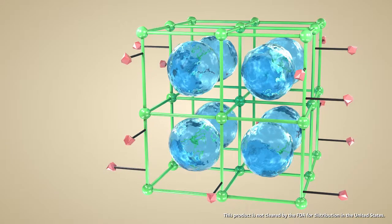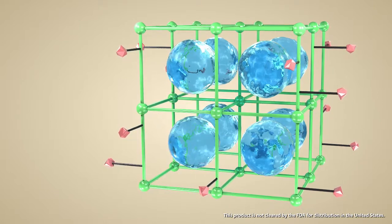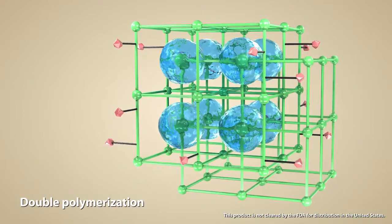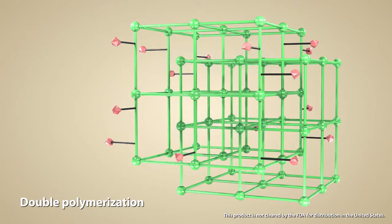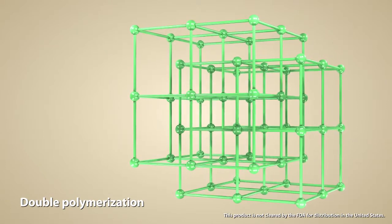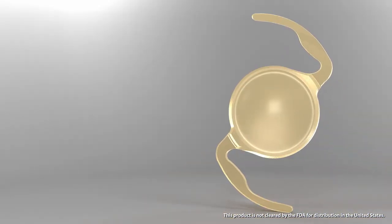A stable and steady structure is formed within the polymer molecule through a unique manufacturing process called double polymerization. This eliminates water components, along with unreacted monomers within the polymer network, reducing the incidence of glistening and subsurface nanoglistening and ensuring long-term reliability.